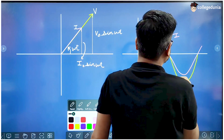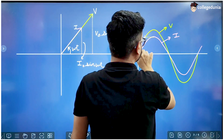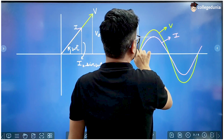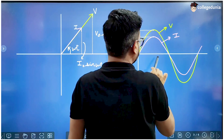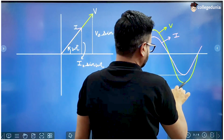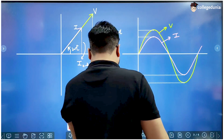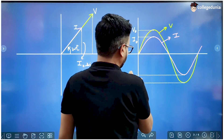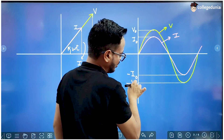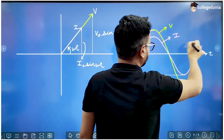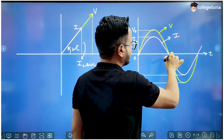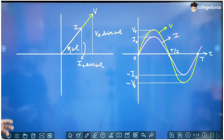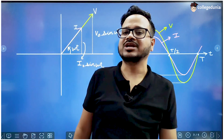So this is the graph of V and I. We can mark these values: this is the peak value of current, this is the peak value of voltage. On the other side, this is minus I naught and this is minus V naught. With time on the axis, this is zero, this is the half time period T by 2, and this is your complete time period T. So these are the phasors and the graphs in a circuit containing only a resistance.